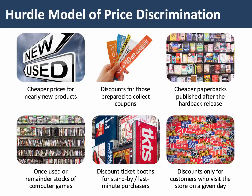A particularly interesting type is the hurdle model, where consumers can negotiate a lower price or get a discount, but to do so they have to overcome some kind of hurdle. Examples include significantly cheaper prices for nearly new products, discounts for consumers prepared to collect coupons, a cheaper paperback released months after the hardback, big discounts on once-used computer games, waiting until the last minute for a discounted theatre ticket — taking the risk of missing out altogether — and in-store discounts available only to customers who visit on a given day.